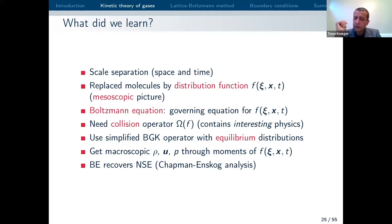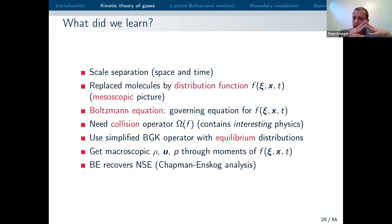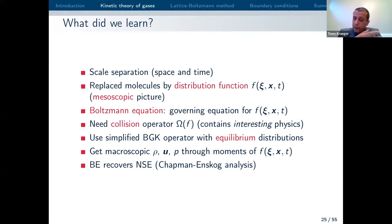To wrap up my overview of kinetic theory: it's important that we have some level of scale separation, which makes it relatively easy to perform coarse-graining. We introduced the distribution function on the mesoscale. The Boltzmann equation is the governing equation for the distribution function. The collision operator tells us how we can capture the collision of molecules — this is where all the interesting physics happens, because without collisions we would just have particles moving on straight lines. The key idea is we can introduce the BGK operator: we assume relaxation towards an equilibrium, and we get the macroscopic variables of Navier-Stokes as moments of the distribution function f.